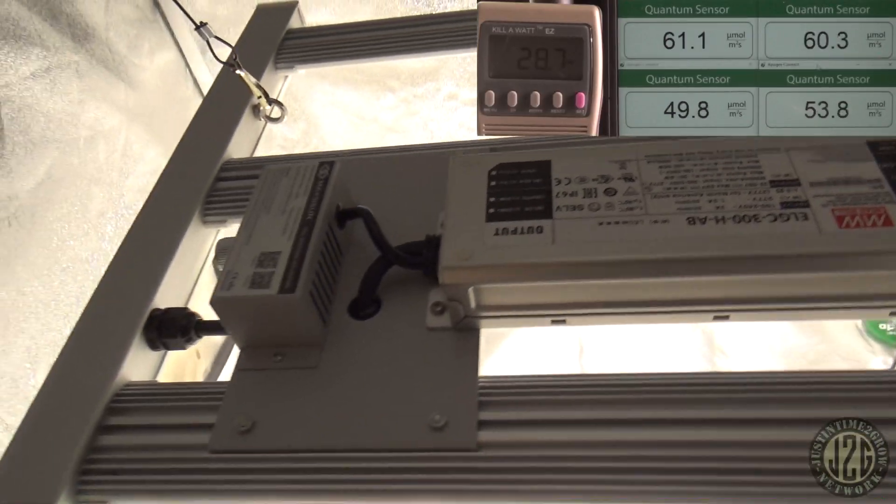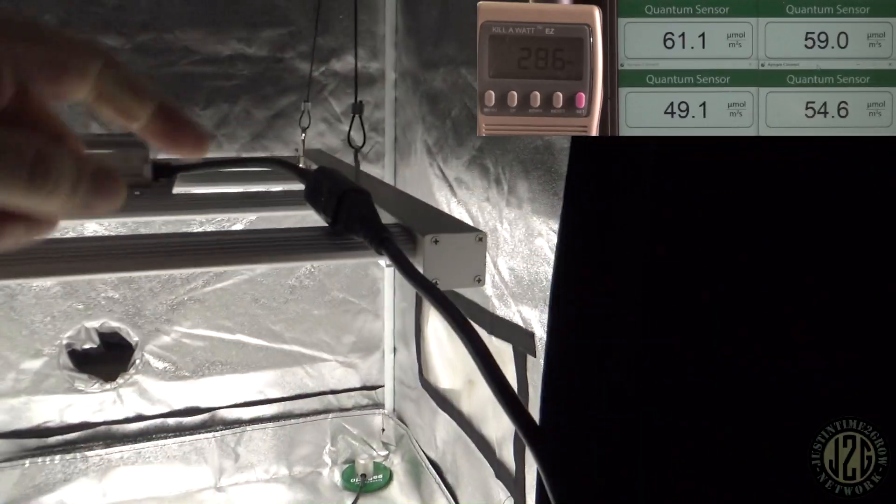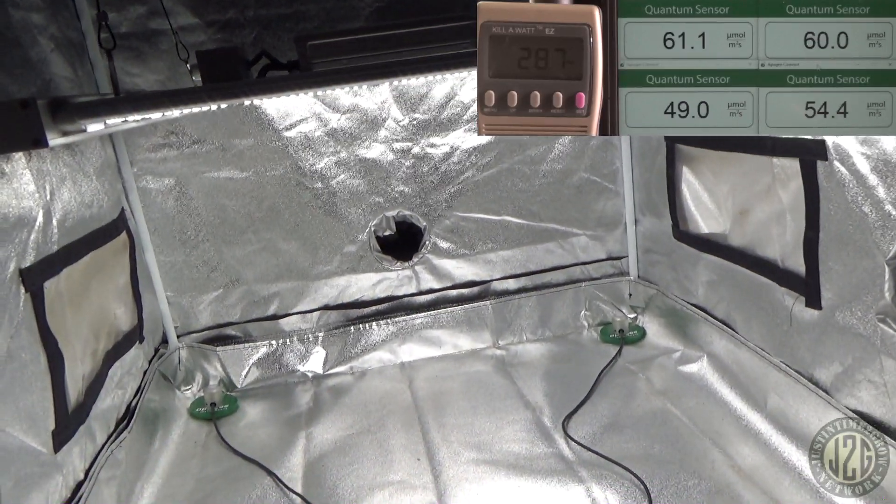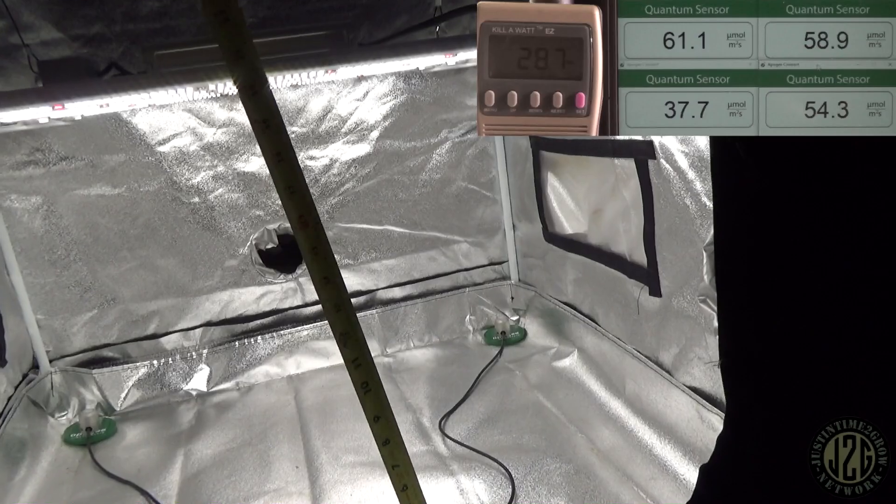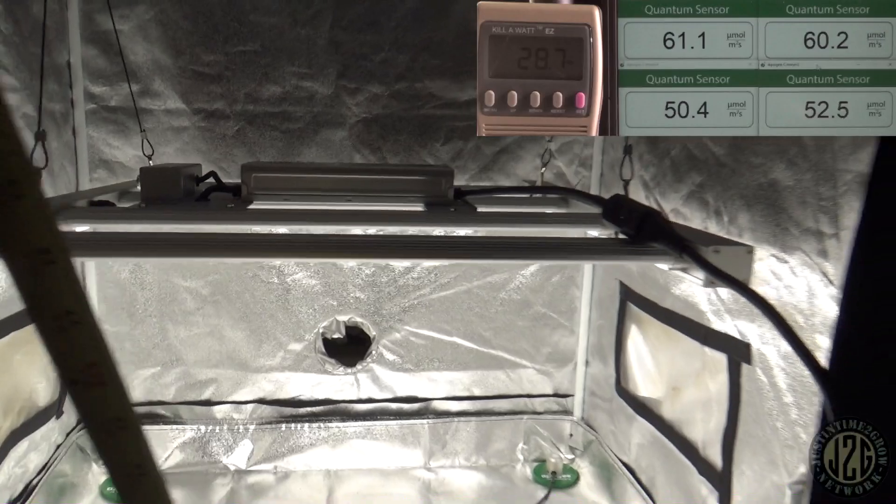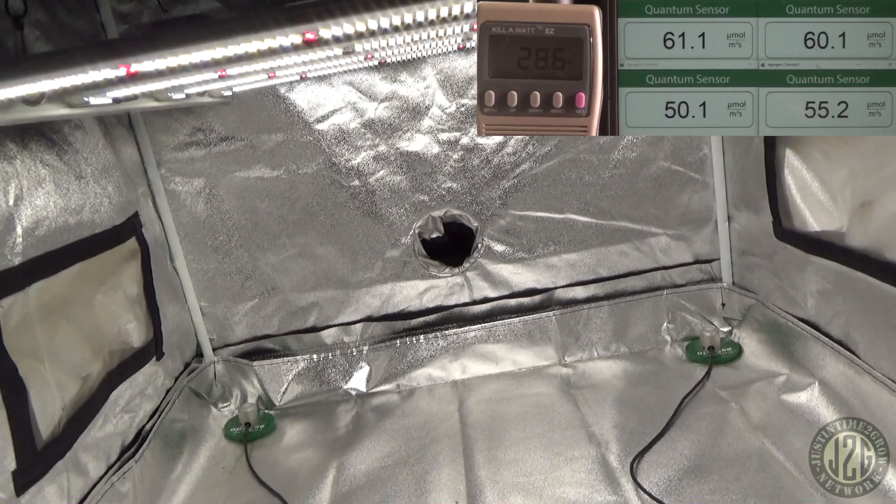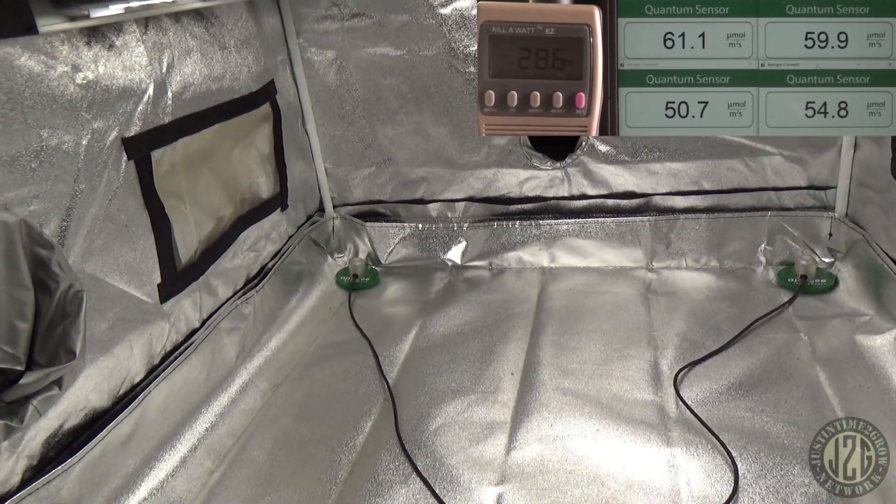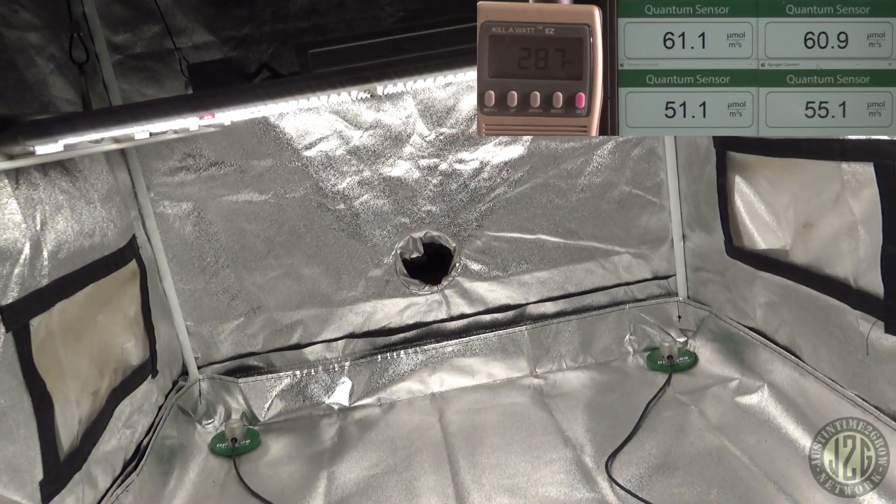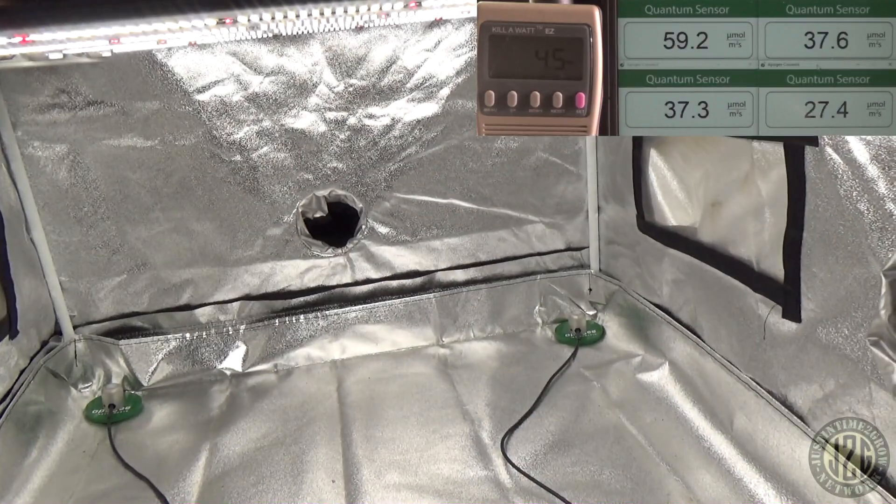Look at the driver again. We got the dimmer over on the side over here, just hooks up with the cord. You can see the four corner PAR reading right now. We are at 21 inches off the deck, which is going to be a 20-inch canopy because the sensors are about an inch tall. Right now we're at the minimum, looks like it's pushing about 28 watts, about 60 PAR to the corners.